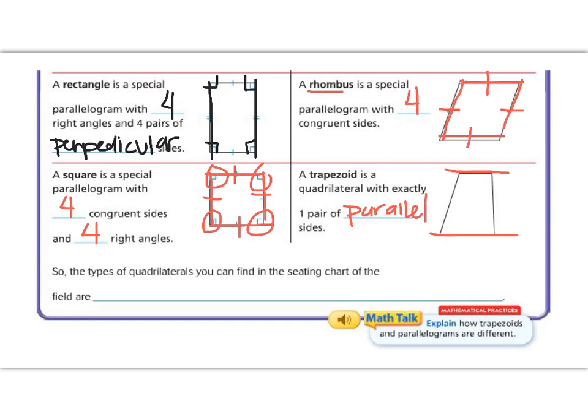So in the shape with the seating chart, we saw a parallelogram. We saw a rectangle.